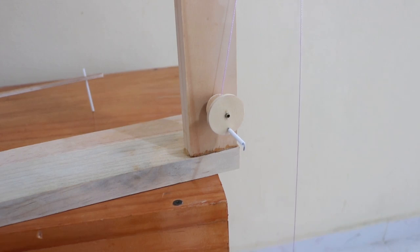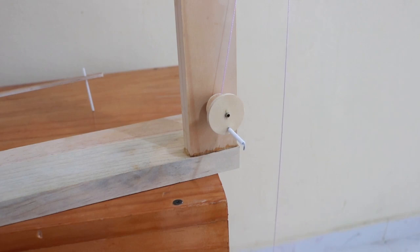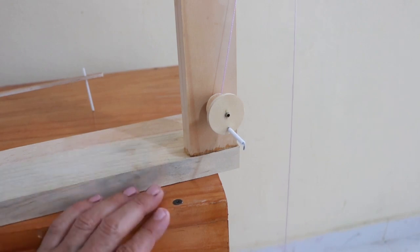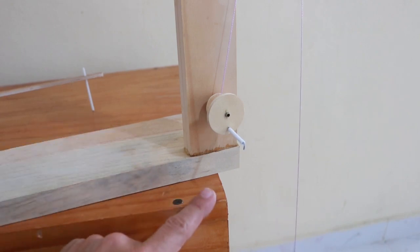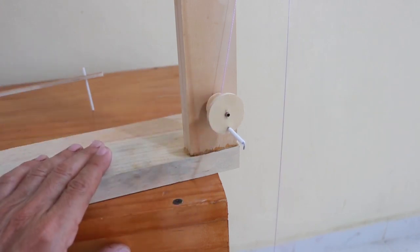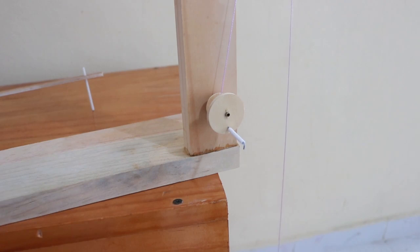That is the reason we need the pendulum and escapement mechanism, so that the potential energy on the weight is released slowly but, more importantly, at fixed intervals of time. That is what gives the clock the ability to measure time with precision.